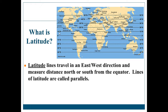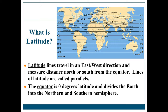Lines of latitude are called parallels because, thinking about your math class, parallel lines are lines that are always the same distance apart and never touch. All lines of latitude are the same distance apart and they never touch. It's important that you know the lines travel from east to west, but they tell you how far you are north or south from the equator. And then there's the equator itself, which is 0 degrees latitude — it divides the Earth into the northern and southern hemispheres. We're going to talk about what a hemisphere is on the next slide.